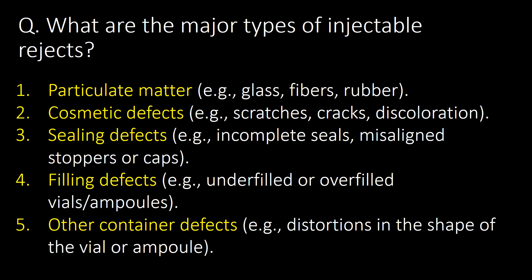What are the major types of injectable rejects? First, particulate matter, which includes glass, fiber, and rubber. Second, cosmetic defects, which include scratches, cracks, and discoloration. Third, sealing defects, which include incomplete seals, misaligned stoppers, or caps. Fourth, filling defects, which include low or high fill volume. Fifth, other container defects.